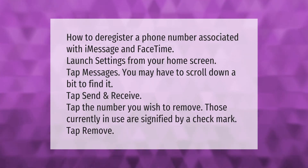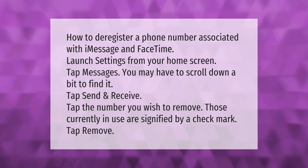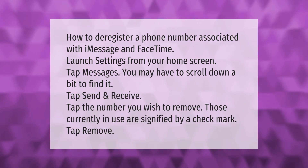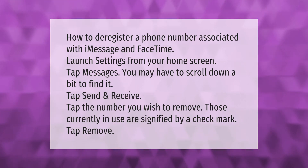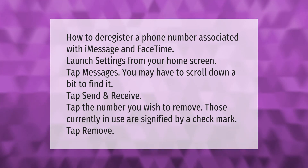To deregister a phone number associated with iMessage and FaceTime, launch Settings from your home screen, tap Messages — you may have to scroll down a bit to find it — then tap Send and Receive. Tap the number you wish to remove; those currently in use are signified by a checkmark. Tap Remove.